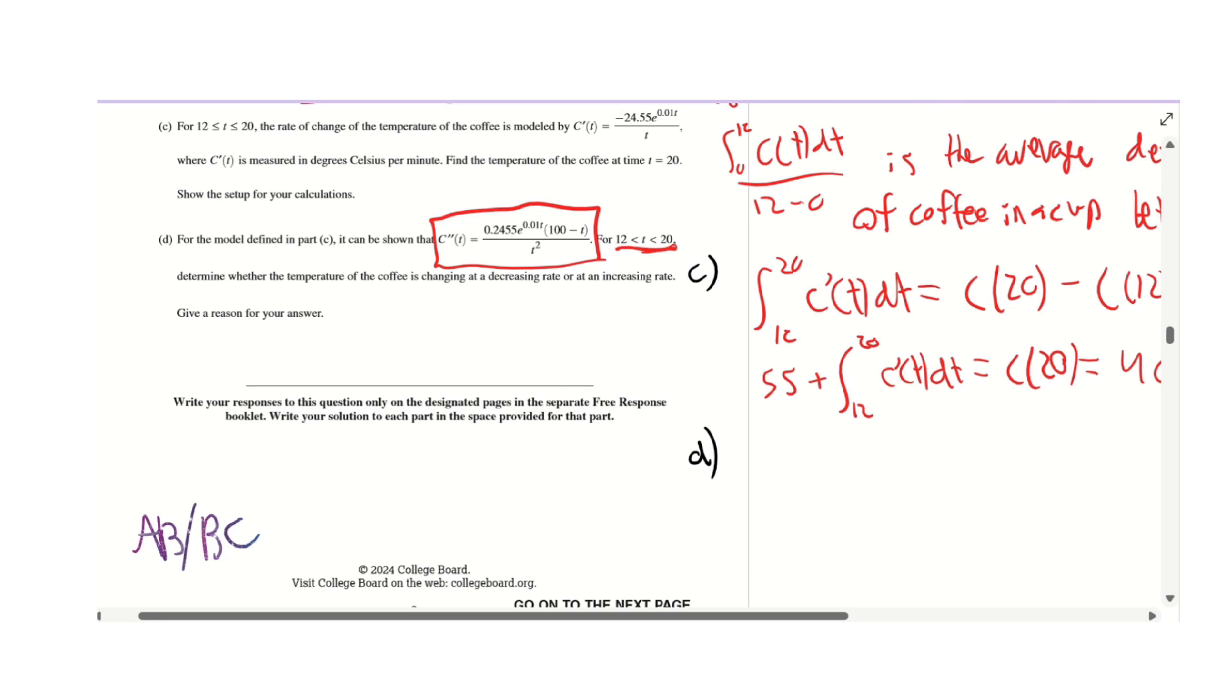Looking at the formula, this term is always positive because it's a positive number times e to some number, which is positive. t² is always positive. So what we're really looking at is this term: 100 - t. We can see that 100 - t means that for t...